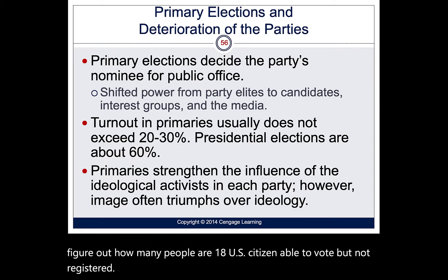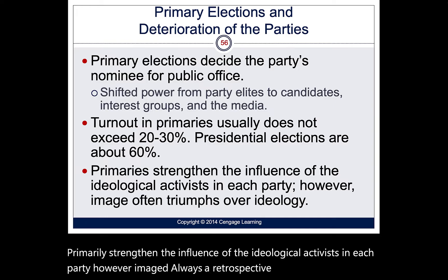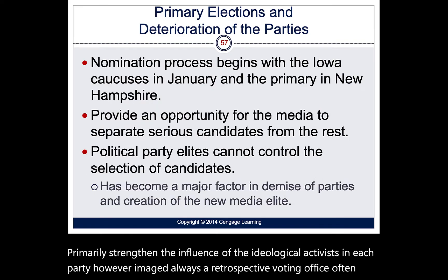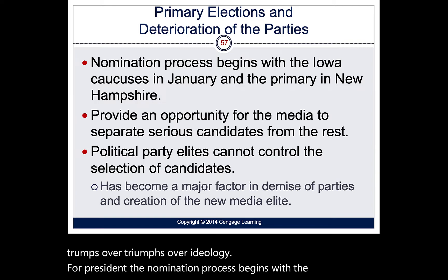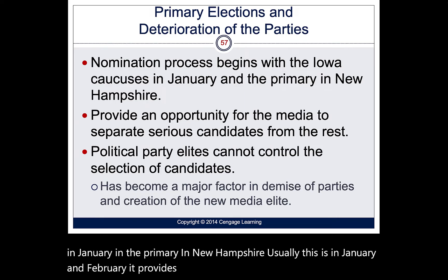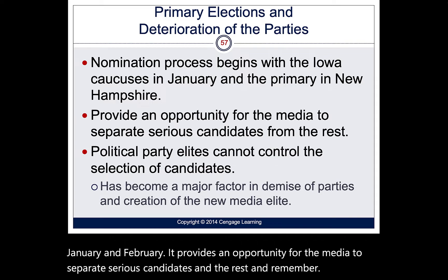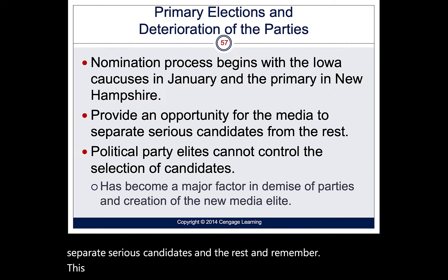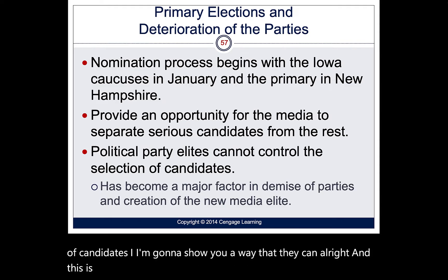Primaries strengthen the influence of ideological activists, though image and retrospective voting often trump ideology. For presidential nominations, the process begins with the Iowa caucuses and the New Hampshire primary in January and February, giving the media an opportunity to separate serious candidates. The author says political party elites cannot control the selection of candidates — but I'm going to show you a way they can, primarily through the Democratic Party.